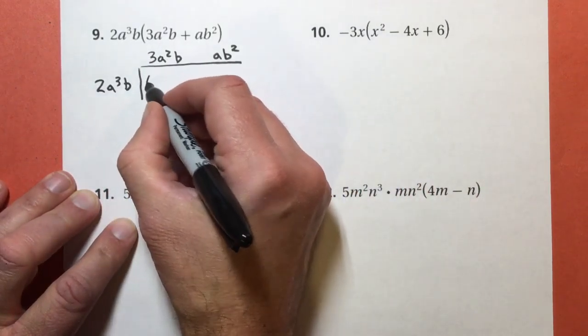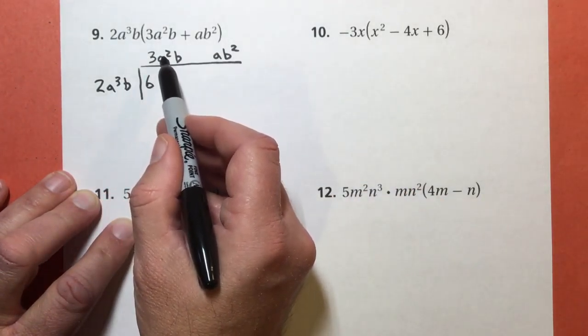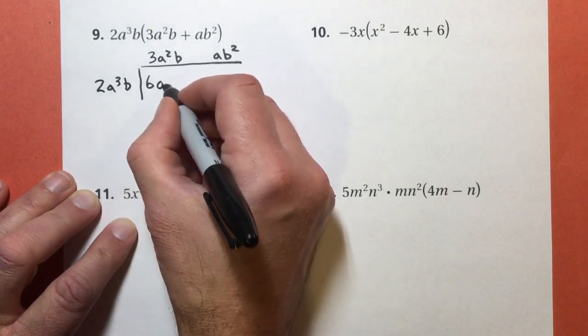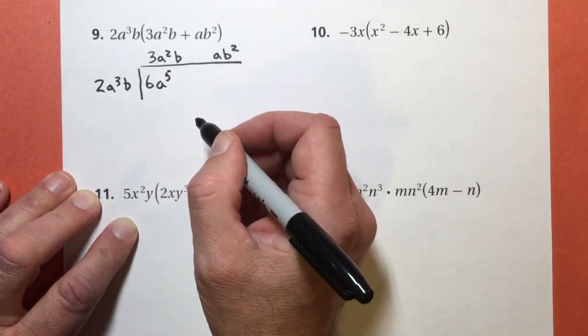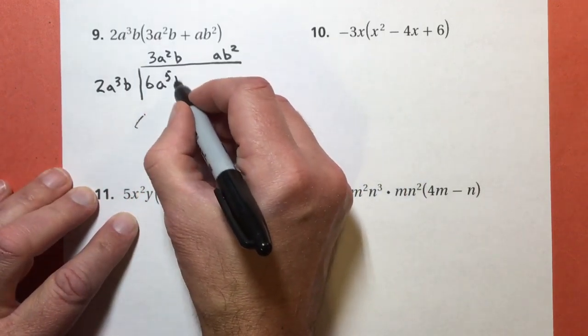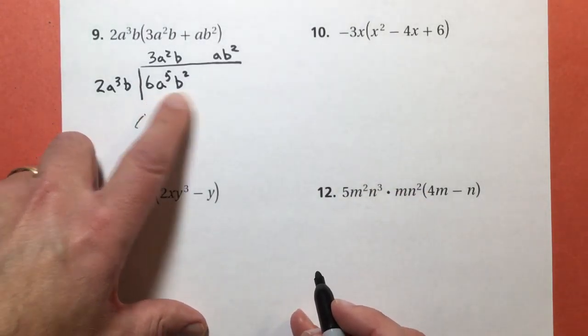2 times 3 is 6. You know that. a to the third plus, sorry, times a to the second. 3 plus 2 is 5. Sorry, a to the fifth power. And b times b is b to the second power. Cool, we got one of them done. Let's do the other one.